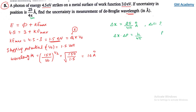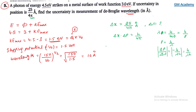Since λ = h/p, we get p = h/λ. Differentiating: Δp/Δλ = h/λ². Substituting into the uncertainty expression: Δx · (h/λ²) · Δλ = h/(4π).